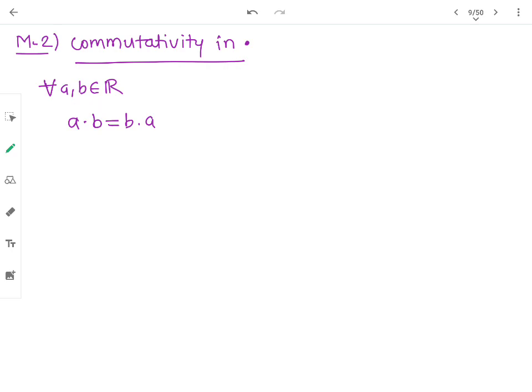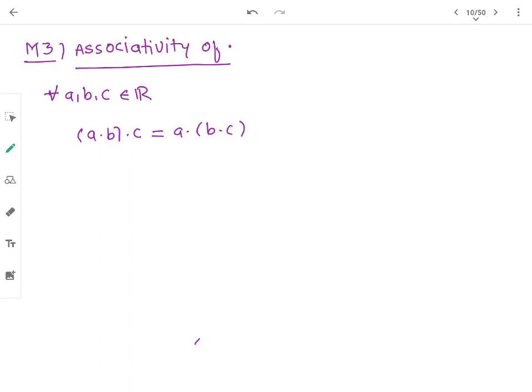Second one is commutativity. Take 3 and 6 - they belong to real numbers. So 3 into 6 equals 6 into 3, both are equal. Next one is associativity with 3 numbers. If you have to define this property, two will be mixed up or grouped differently, but the result is the same.